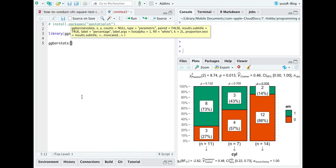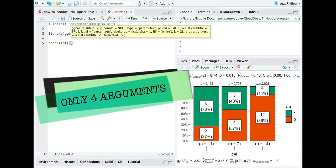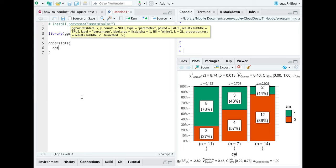Within this function, we need to specify only four arguments. First, our data. For example, let's take mtcars, which you already have in R, so you don't need to look for it.